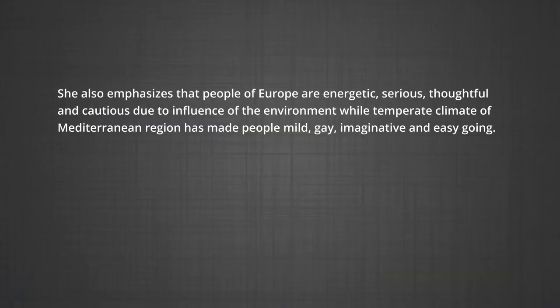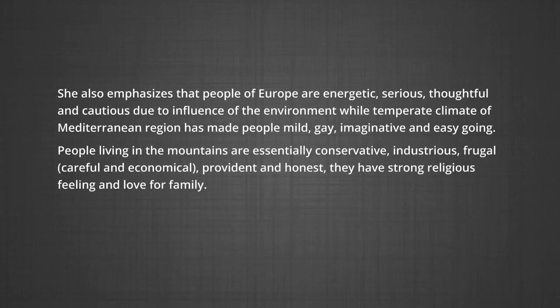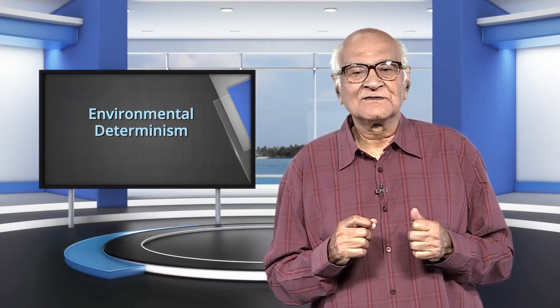She also emphasizes that people of Europe are energetic, serious, thoughtful, and cautious due to the influence of the environment. While the temperate climates of the Mediterranean region have made people mild, gay, imaginative, and easygoing, people living in the mountains are essentially conservative, industrious, frugal — that is careful and economical in their expenditure — and honest, with strong religious feelings and love for family. This is the stage of very low technological development where we can imagine the presence of a naturalized human who listened to nature, was afraid of its fury, and worshipped it. Let us read a story to understand the term environmental determinism in greater detail.